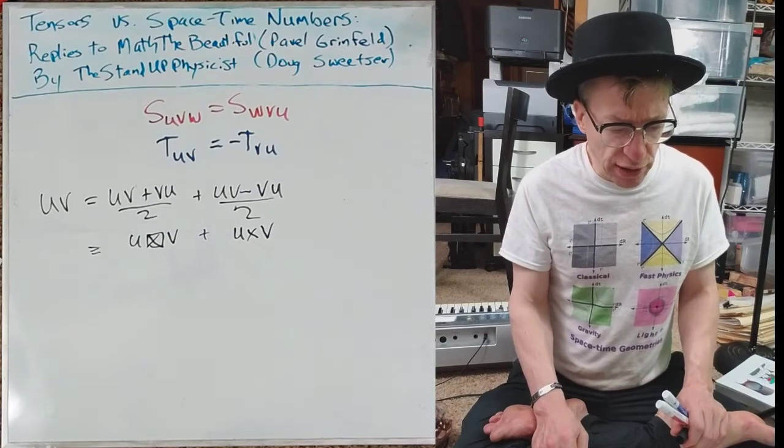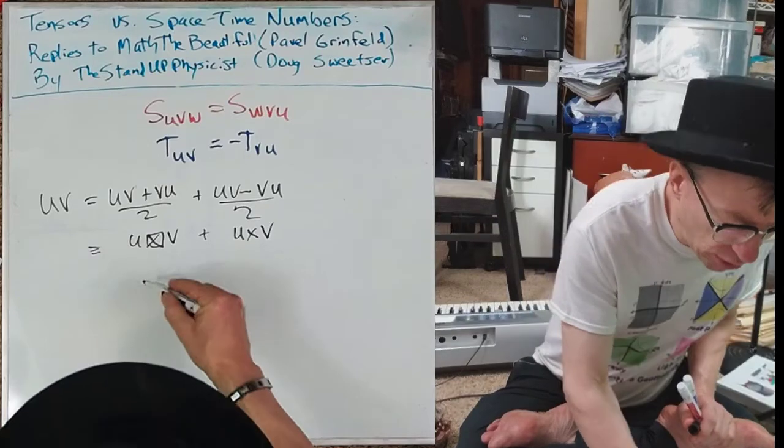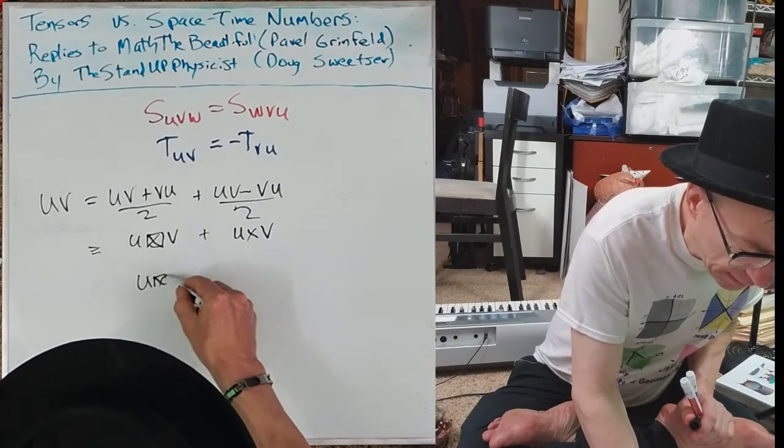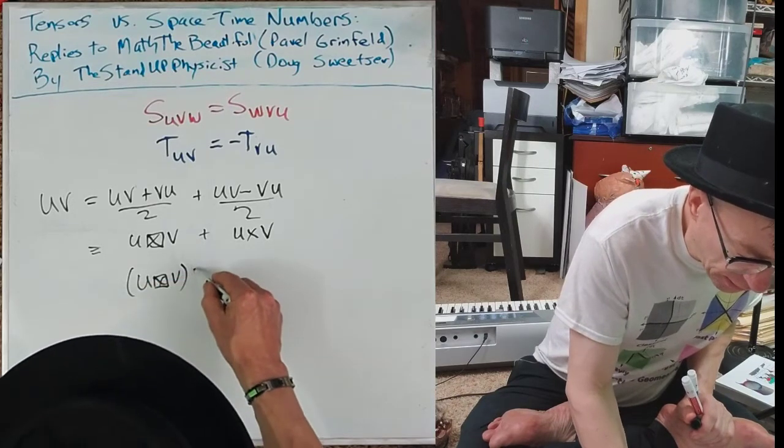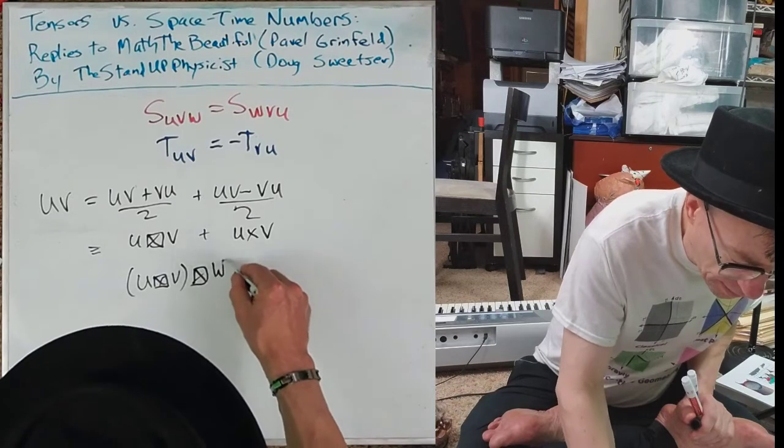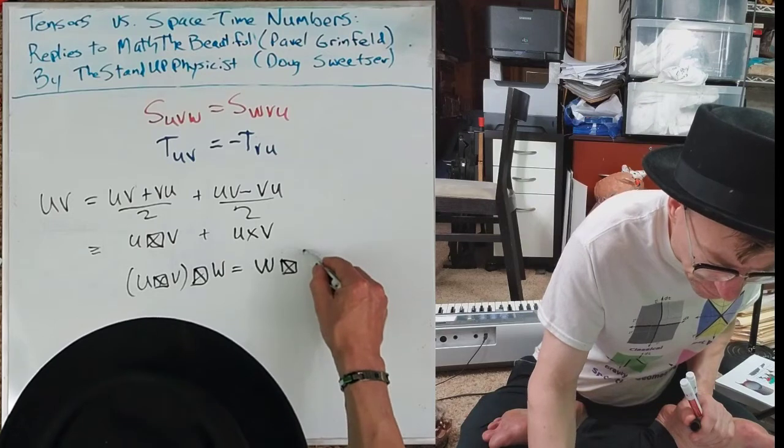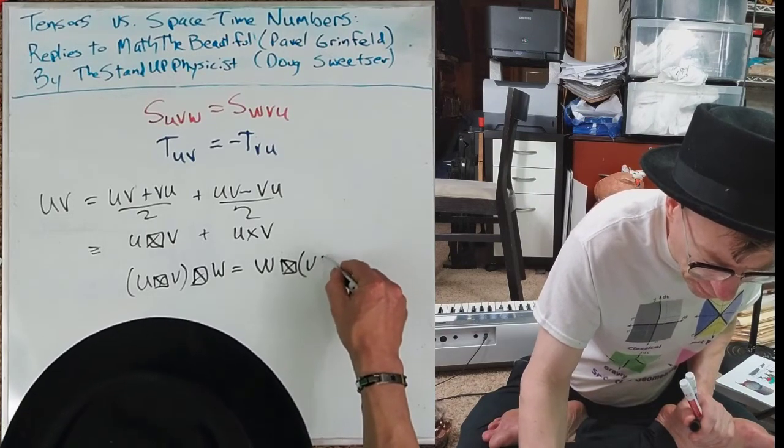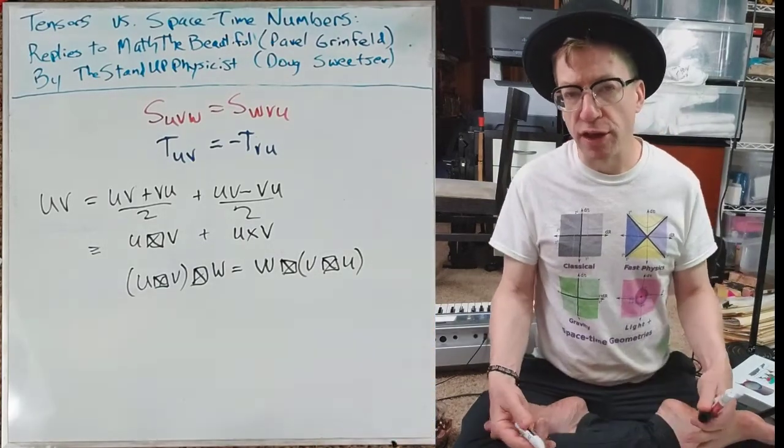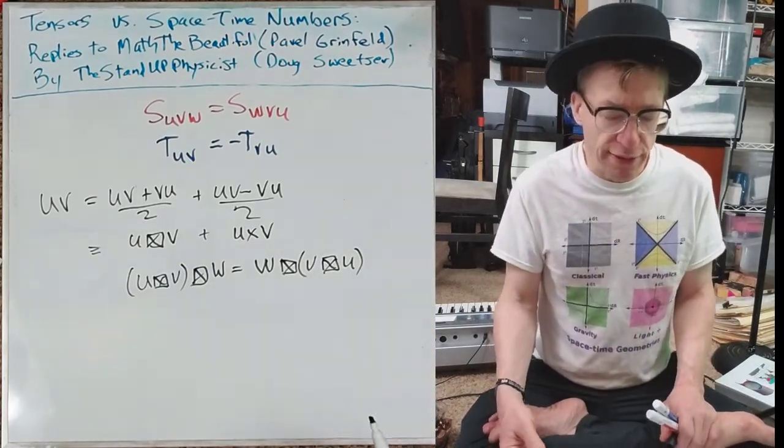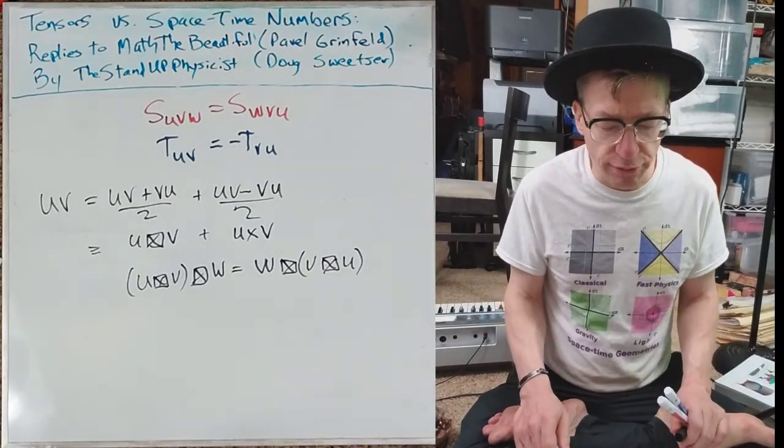So how are we going to deal with this triple product here? Well, we're going to just go u box cross, I guess we'll call it, put a parenthesis around it, w, and that just equals w box cross v box cross u. Now one of the things I do to make sure I'm not missing something is I plug these things into Mathematica and just double-check it, and it didn't work.